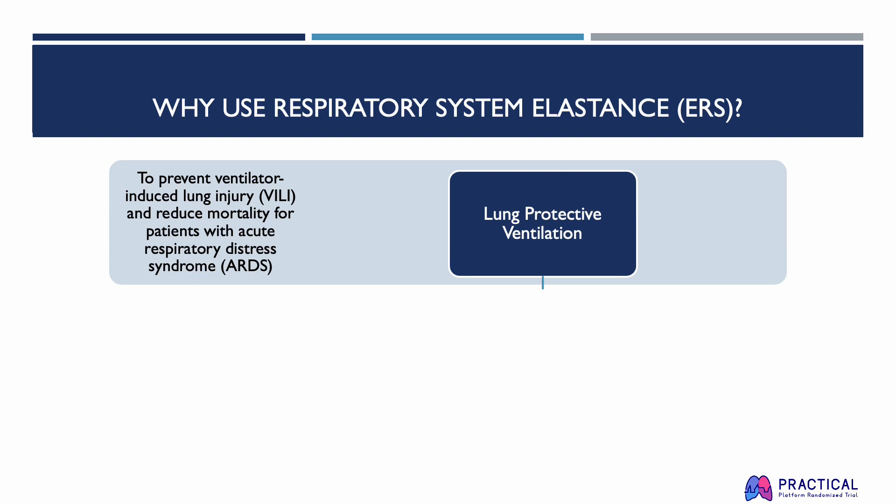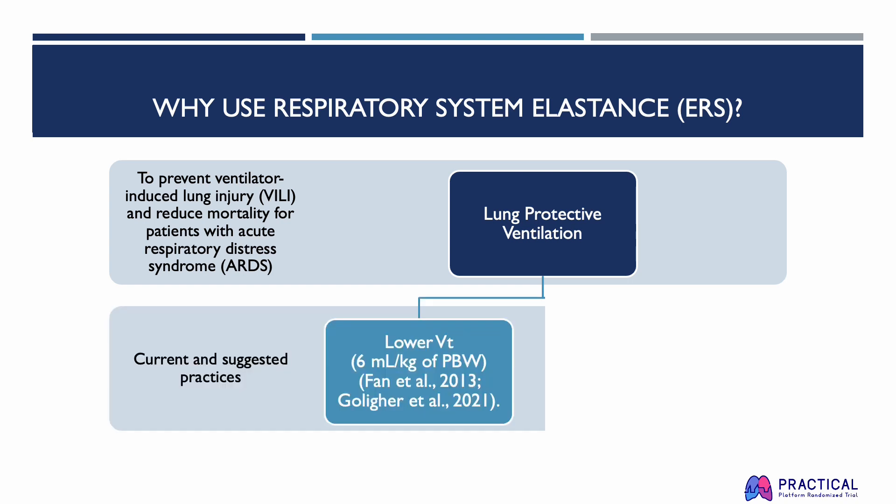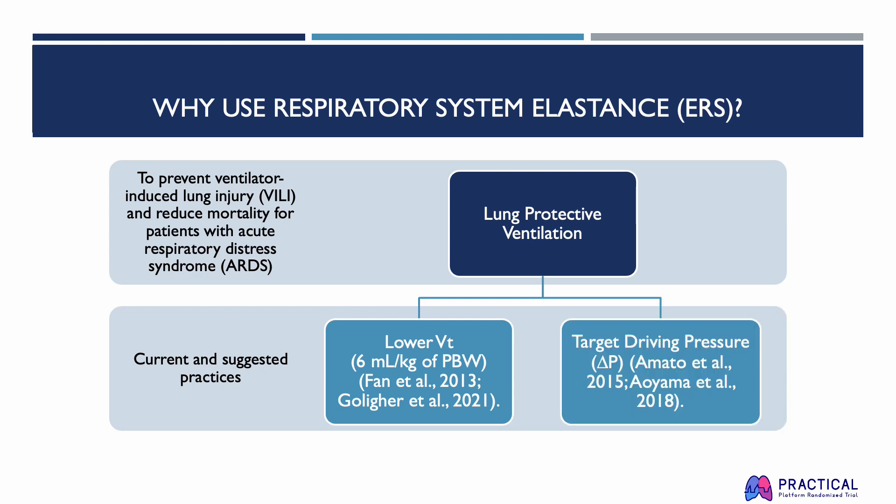To prevent ventilator-induced lung injury and reduce mortality for patients with acute respiratory distress syndrome, the standard of practice has been to achieve lung protective ventilation through lower tidal volume, such as less than 6 milliliters per kilogram of predicted body weight. Recent evidence suggests that the primary target for lung protective ventilation may be the driving pressure, also abbreviated as delta P. According to previous studies, driving pressure was independently associated with mortality for patients with acute respiratory distress syndrome.